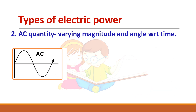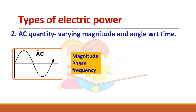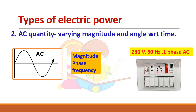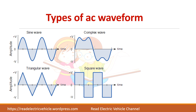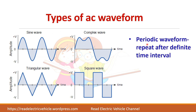For an AC quantity, the magnitude changes with respect to time. An AC waveform is represented by a magnitude, phase (which represents the point at which it starts), and frequency. In India, the supply voltage for home applications is 230 volt 50 Hertz single phase AC. There are different types of AC waveforms — sine wave, triangular, square, or any shape — and the same waveform repeats after a time period. These are called periodic waveforms, but AC waveforms can be non-periodic also.